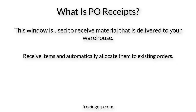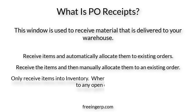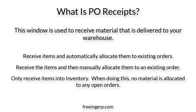There are three ways to receive material in PO receipts. Option one is to receive items and automatically allocate them to existing orders. Option two is to receive the items and then manually allocate them to an existing order. Option three is to only receive items into inventory — when doing this, no material is allocated to any open orders.